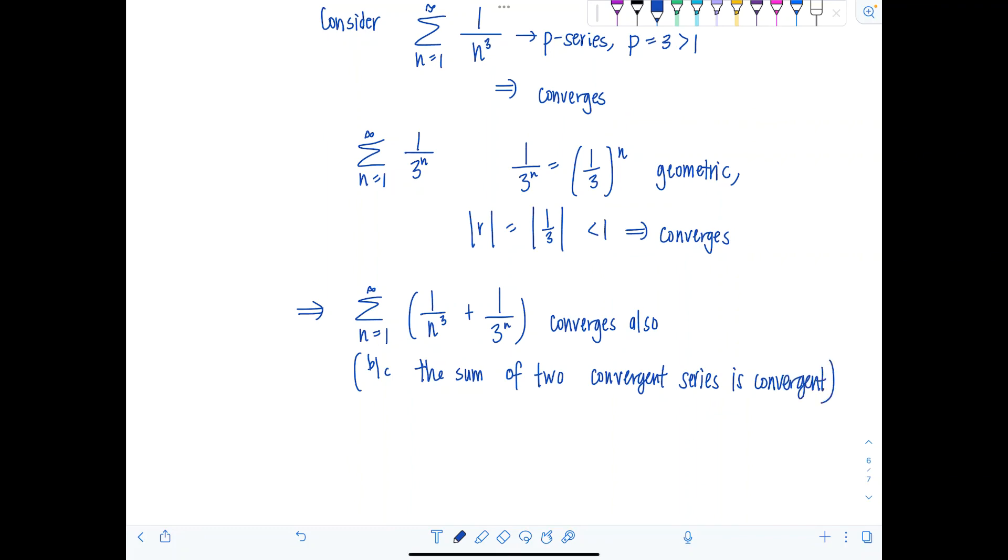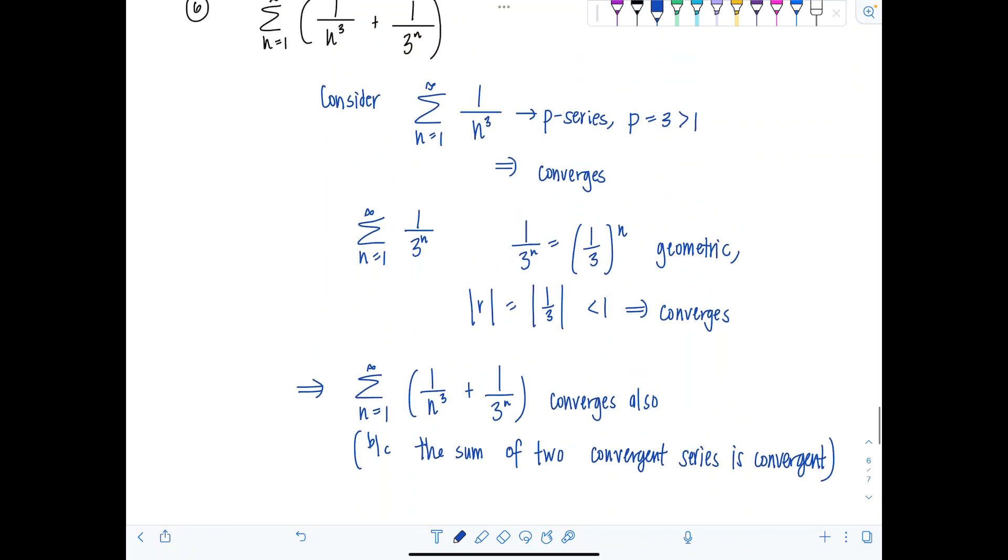Now what if one of them diverged and the other one converged? Like what if instead of 1 over n cubed, if we had 1 over n, the harmonic? That's divergent. So then that would ruin it for everybody. And the whole sum would be divergent. So if one diverges and one converges, one term, the whole thing's going to diverge.